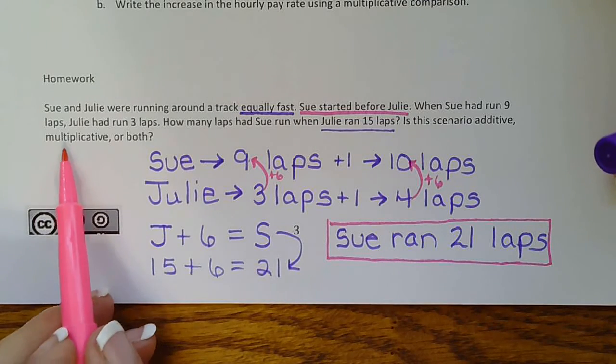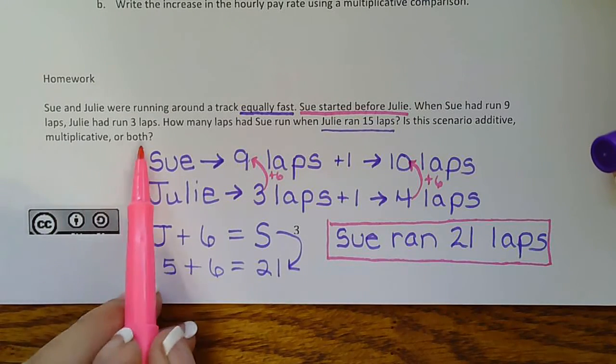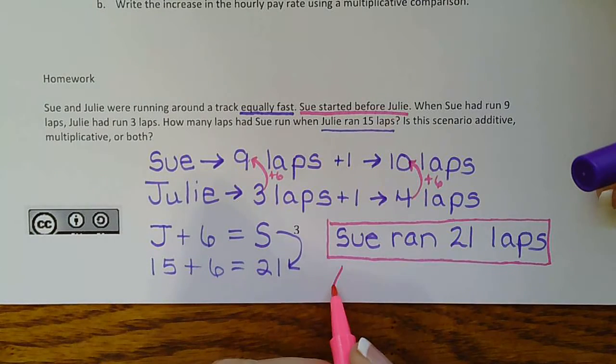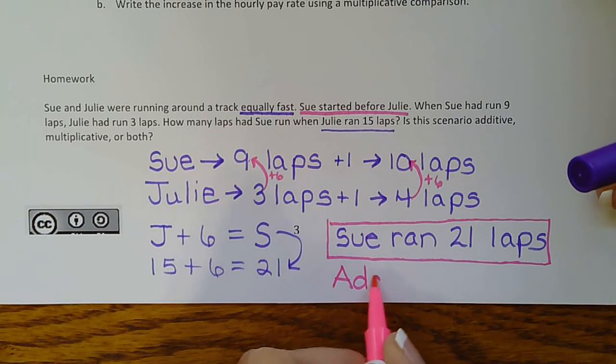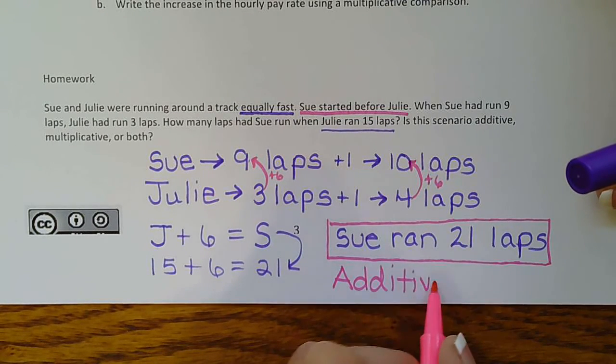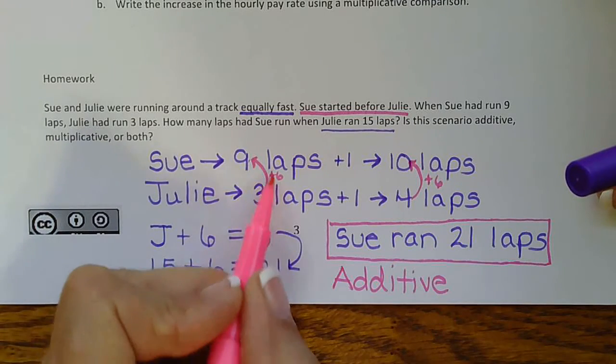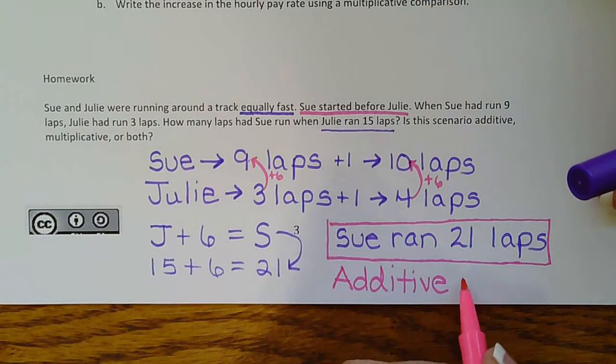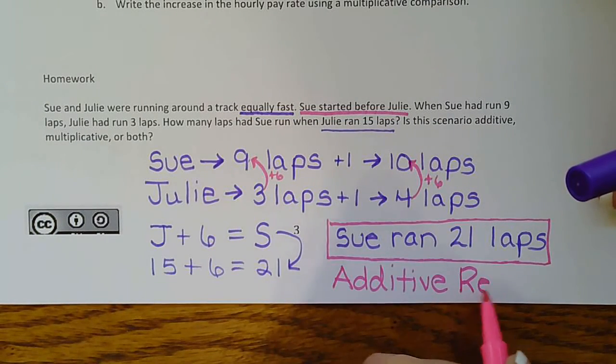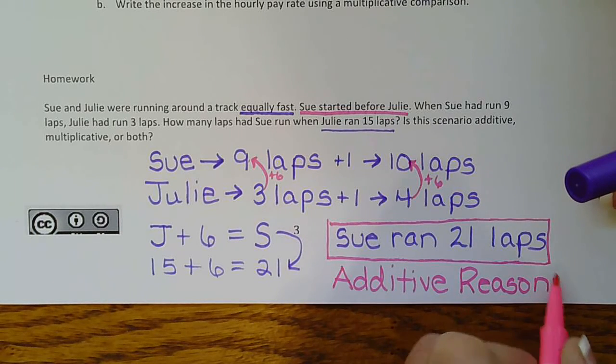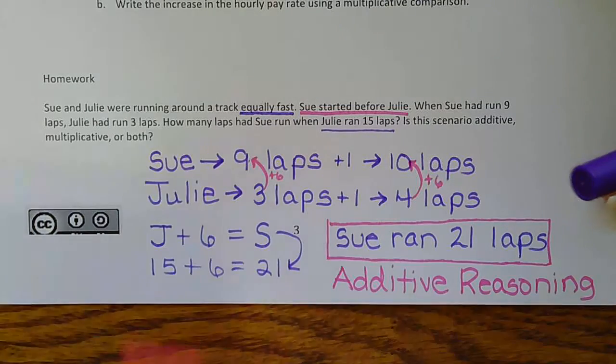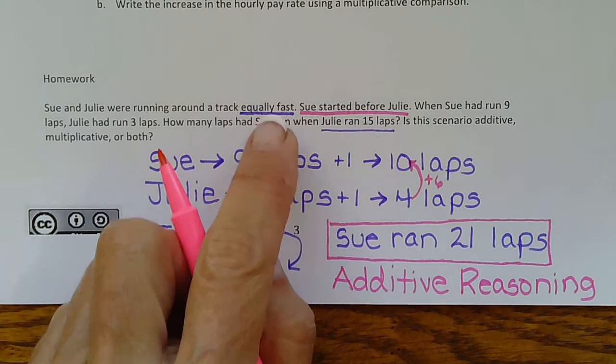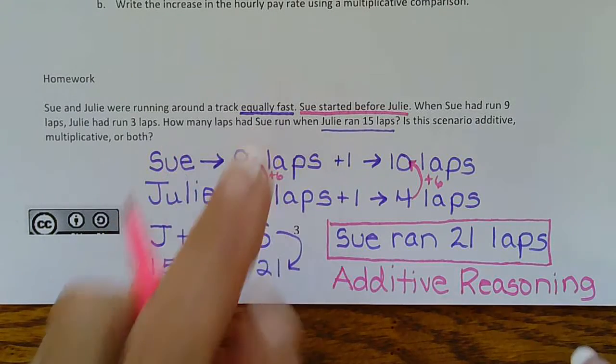Then it asks us, is this additive, multiplicative, or both? Add six, add six. It's additive reasoning. Multiplicative doesn't make sense because although it's times three to get here, it's not times three to get there. So it's not both either. It's just additive reasoning is what we used. Sue will always be six laps ahead of Julie because they're running the same speed.